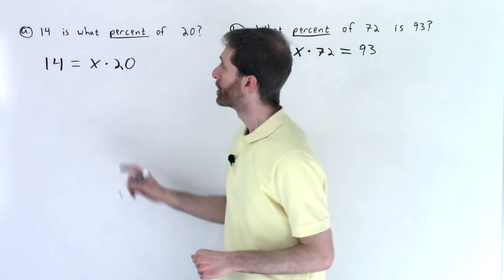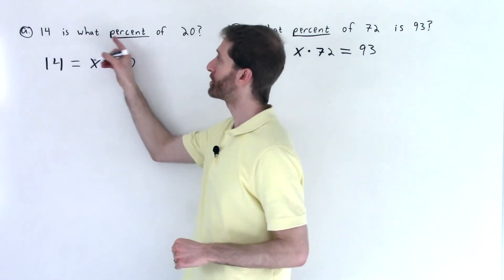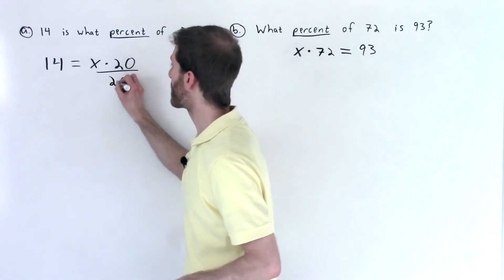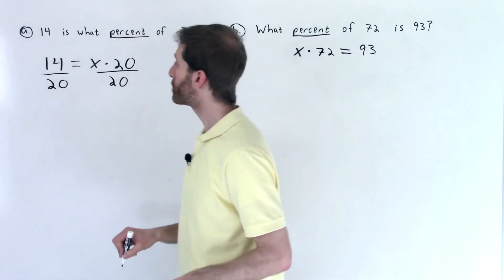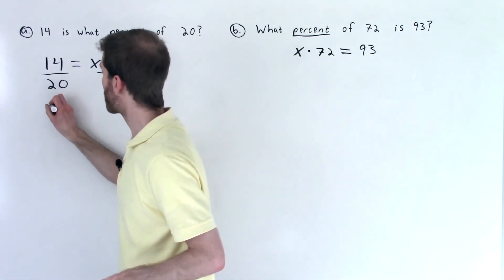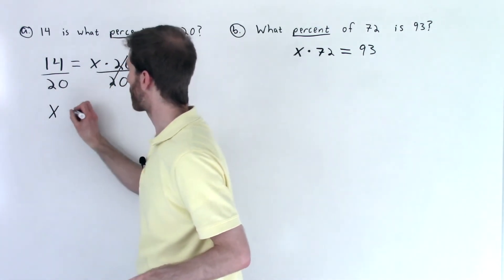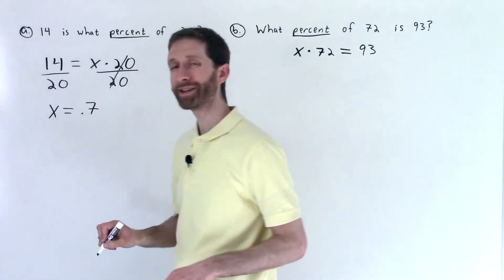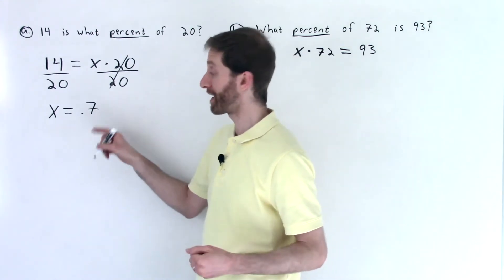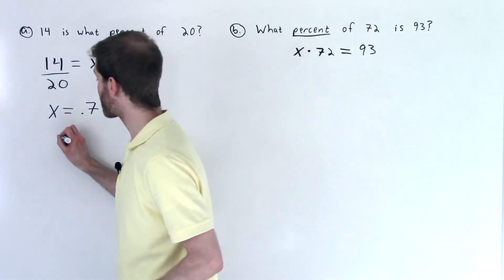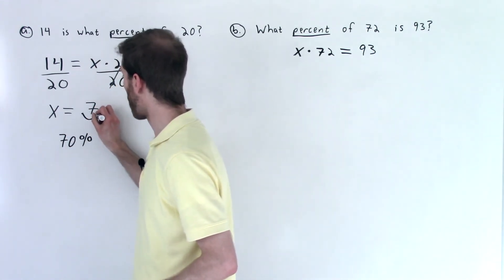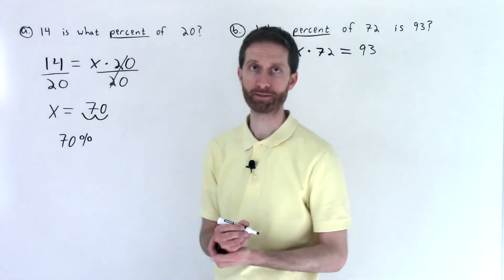Let's go back now and solve each problem. In this problem, again, you had 14 is what percent of 20? We did the translation. I'm going to solve by undoing multiplication of 20, so I divide both sides by 20. I do 14 divided by 20 on a calculator and get x equals 0.7. What is that as a percentage? That's a decimal — 70 hundredths, or seven tenths. So that as a percent is 70%. You can move your decimal point two places to the right and get 70%.